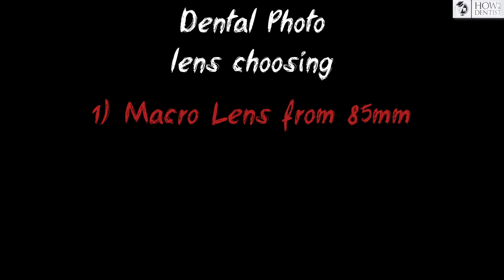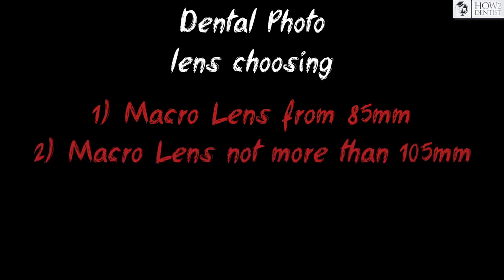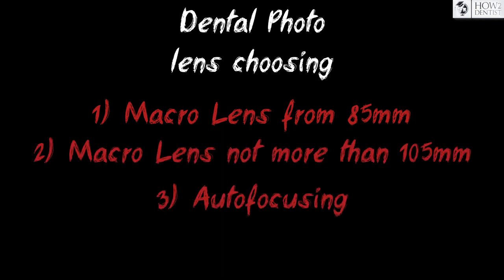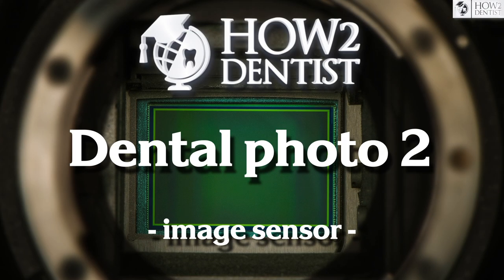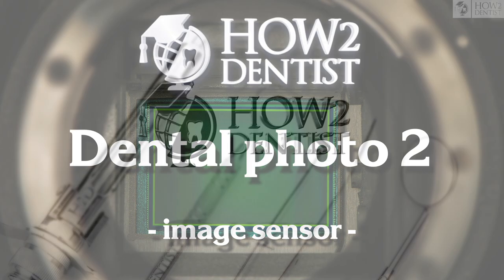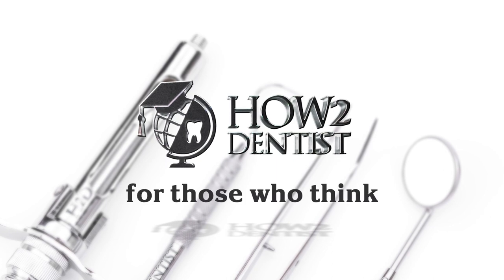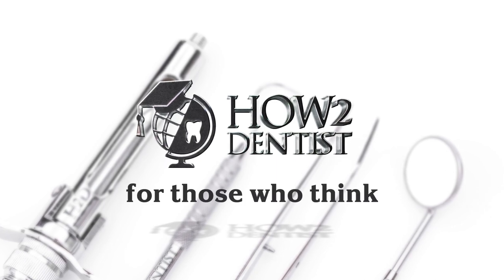So, for great dental photos you need a macro lens with a focal length of 85 to 105mm and the ability to autofocus. Note that it must be compatible with the body of the camera, and how to choose the body is covered in the next video. Thanks to all, see you soon!